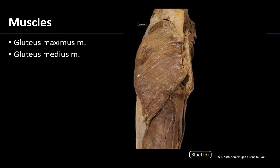The gluteal region is posterior and superiorly placed in the lower limb. When looking at a superficial view, by far the most prominent structure is going to be the gluteus maximus — I'm going to outline it so you can see how extensive it is. This muscle is an extremely thick and large muscle; it's difficult to reflect just due to how thick the muscle fibers are. The main thing you see in this superficial view is the gluteus maximus, but you can see a slight sliver of the gluteus medius here superiorly.